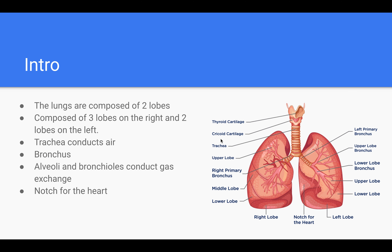So, the lungs. The lungs are a major organ of the respiratory system. There are two of them, and they are divided into sections called lobes. On the right lung there are three lobes, and it is slightly larger than the left lung, which has only two lobes — the upper and lower lobe.